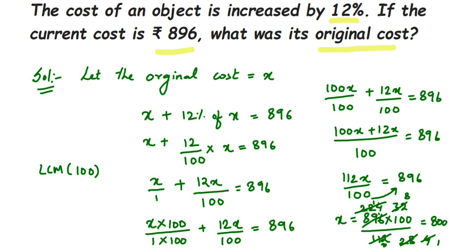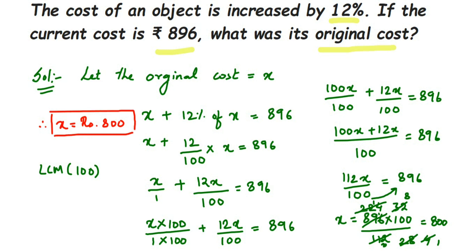Therefore, x equals 800, which means the original cost was 800 rupees. I hope this question is clear. If you have any other question from this chapter or any other chapter, please drop a comment or type the whole question and I'll try to make a video on it. Thank you so much for watching.